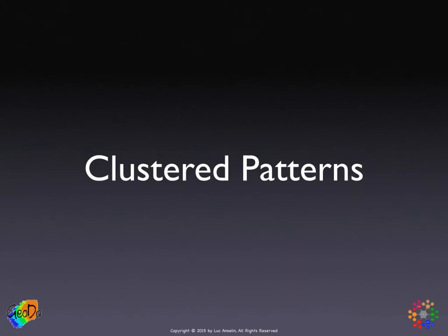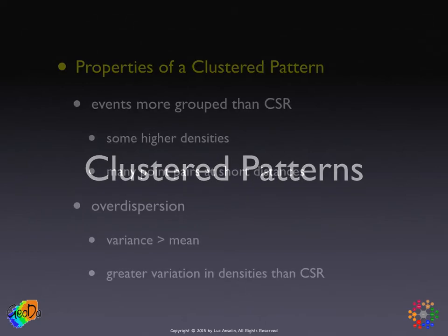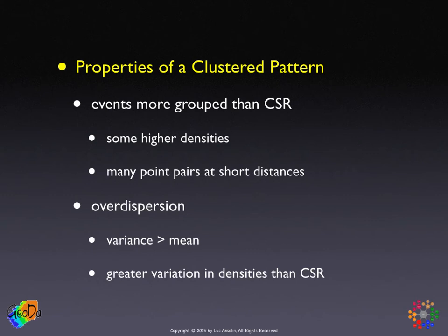The first alternative to complete spatial randomness that we consider are the clustered patterns. Typically, that is what we are most interested in—some clustering. What does this really mean? It means that the events are somehow more together, more grouped, than they would be under spatial randomness.